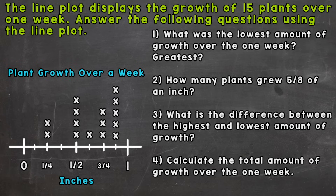If we look at our line plot, we have a title up top: plant growth over a week. Down below, we have a label for what those fractions and other numbers mean. Those represent inches — so a half inch, three fourths of an inch, or maybe even one whole inch.